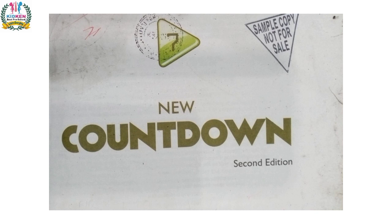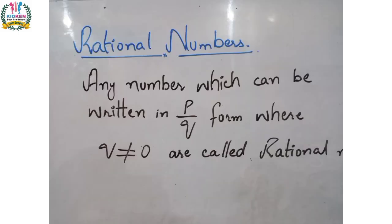So let's start our topic and the topic is Rational Numbers. So what is a Rational Number? Any number which can be written in the form P upon Q, where Q is not equal to 0, is called a Rational Number. And if Q is equal to 0, then it is not a Rational Number.